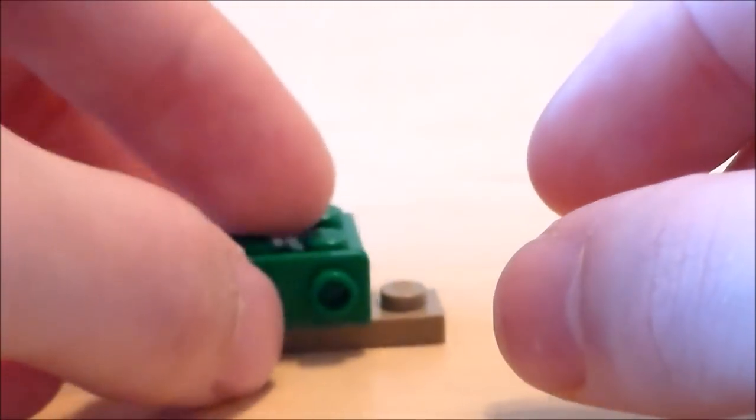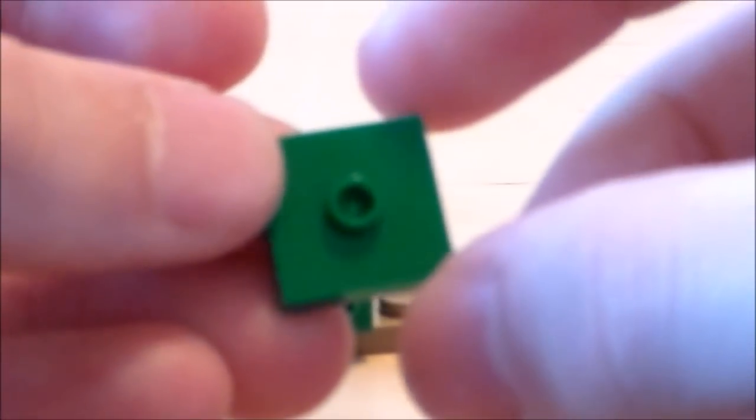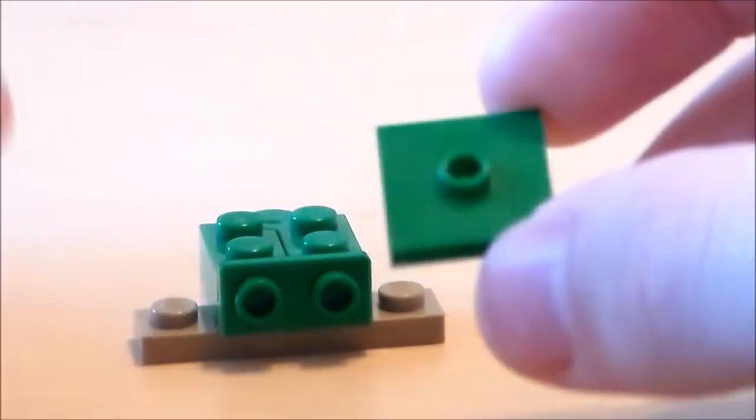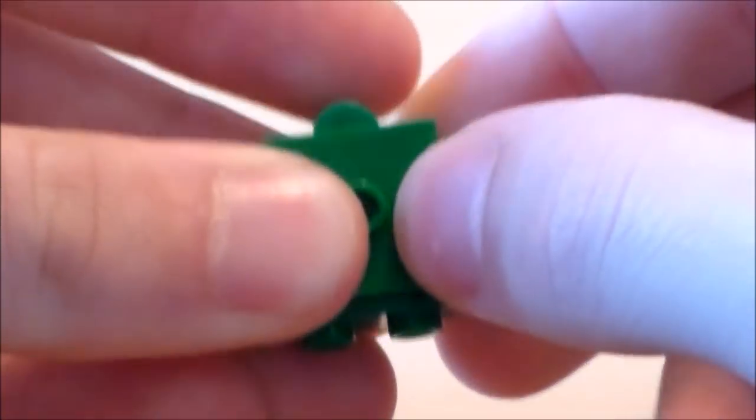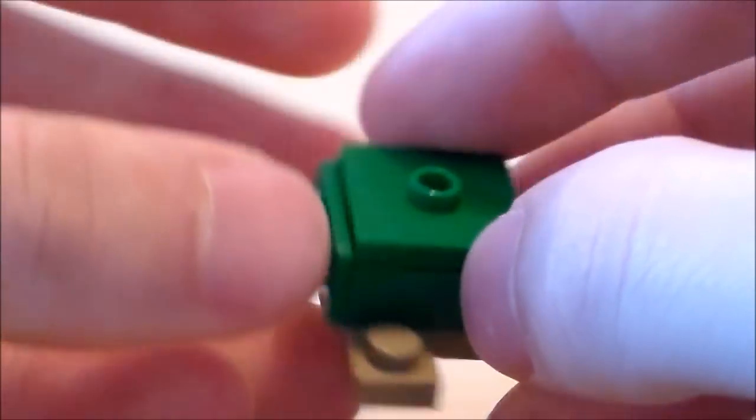Next to top off the turtle I'm going to get a 2x2 green jumper plate and I'm going to put that right on top right there. So there's the main shell part for our turtle.